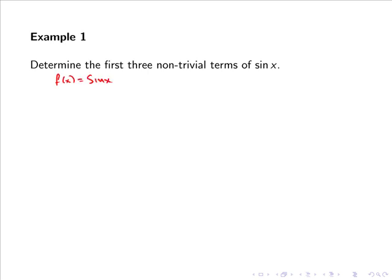Our first step is to evaluate the function at the point 0. So f of 0 equals sine of 0, which equals 0.